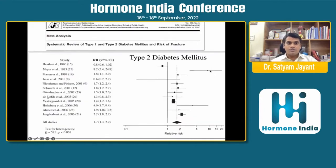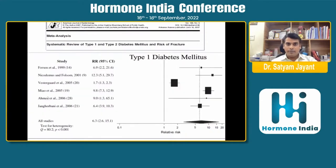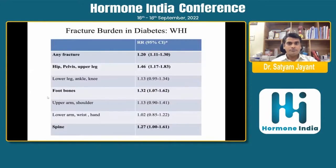A systematic meta-analysis of 12 studies revealed that the overall risk of fracture in type 2 diabetes is around 1.7 times higher compared to the non-diabetic population. Similarly, in type 1 diabetic patients, a meta-analysis of 6 studies revealed the relative risk is around 6.3 times higher than non-diabetics.